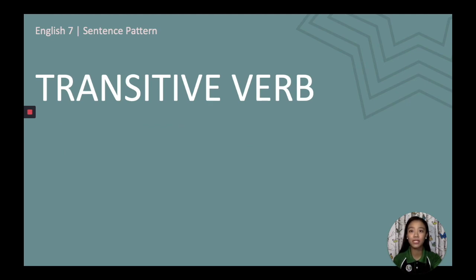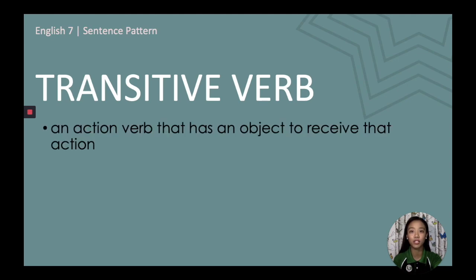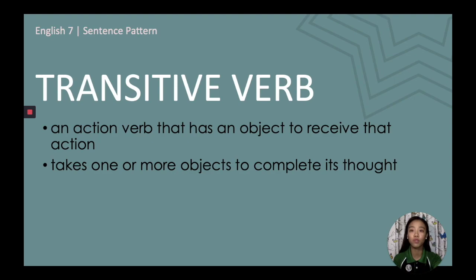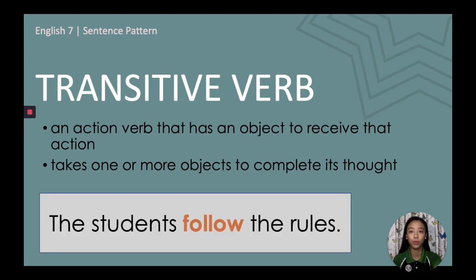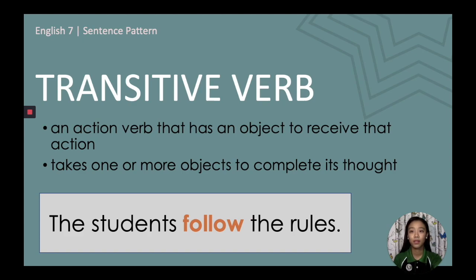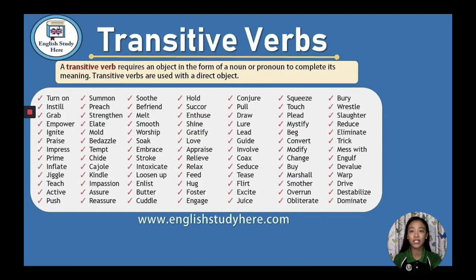A transitive verb is an action verb that has an object to receive that action, and it takes one or more objects to complete its thought. In 'The students follow the rules,' the subject is 'the students,' and the action the subject is doing is 'follow.' Therefore, 'follow' is the transitive verb in this sentence.